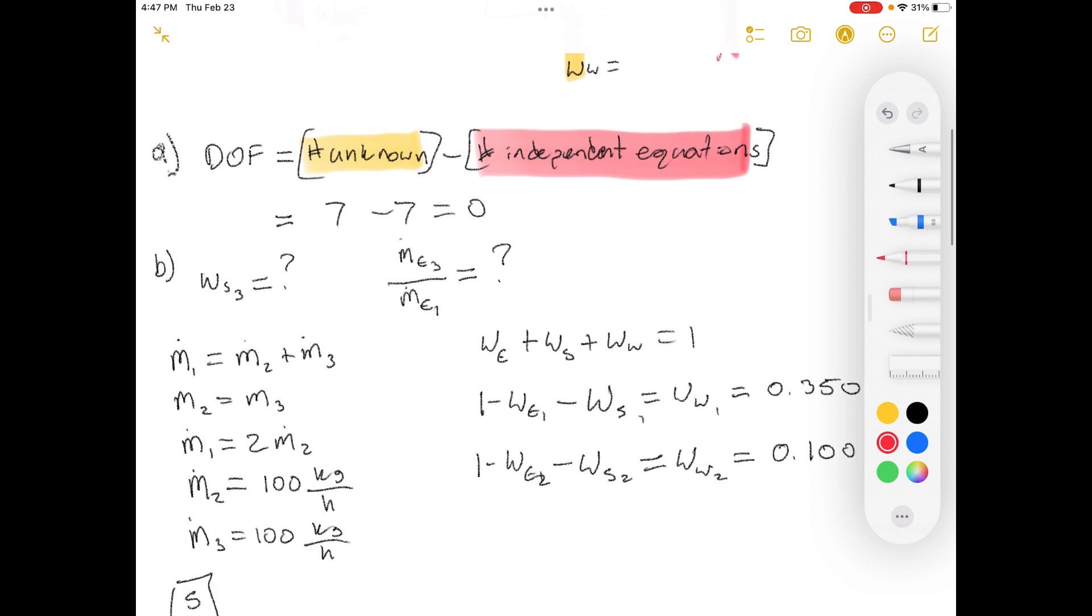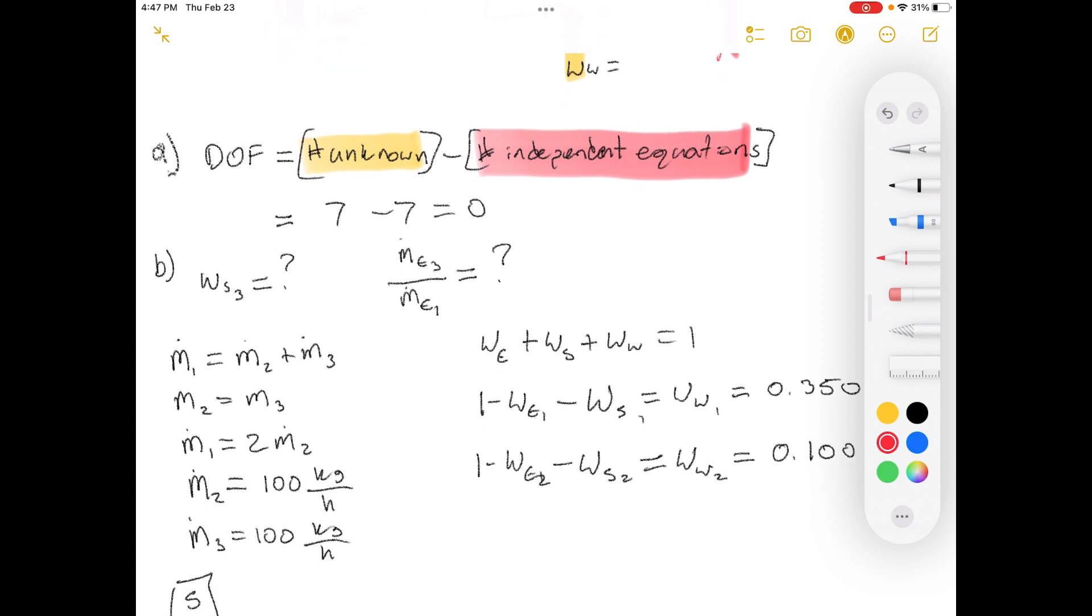Okay. Part B. Calculate one, the mass fraction of S in the bottom stream, and two, the fraction of ethanol in the feed that leaves in the bottom product stream, i.e. kilograms of ethanol in bottom stream per kilogram ethanol in feed, if the process operates as designed.